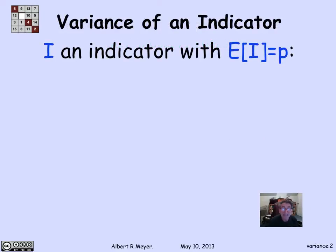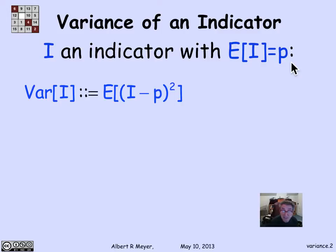A basic place to begin is to ask about indicator variables and their variance. An indicator variable I is 0-1 valued — also called a Bernoulli variable. If the probability that it equals 1 is p, that's also its expectation. So we have an indicator variable with expectation p, and we're asking what's its variance, which by definition is the expectation of (I minus p) squared.